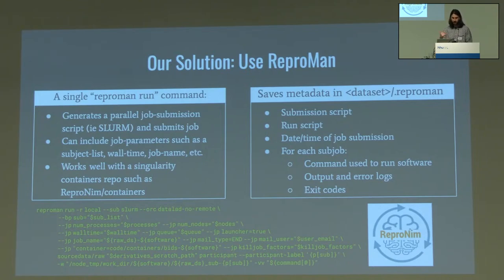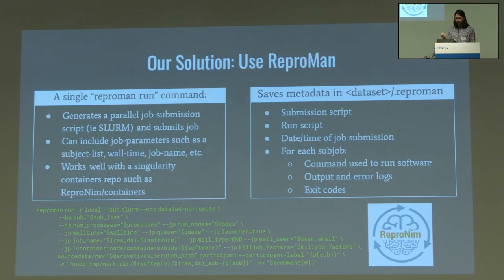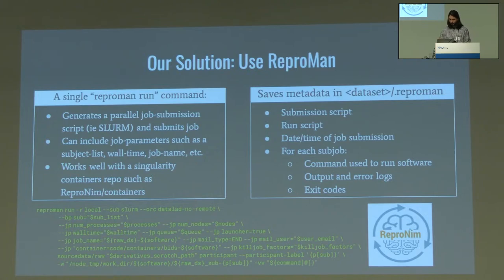It's just like Datalad containers run — it's compatible with a repository of Singularity containers, and we're using Repronim slash containers, which is great for recording provenance and reproducibility. It will save the metadata in your dataset in a .reproman directory — including the submission script, the run script, the date and time of job submission, and for each subjob: the command used to run the software, logs, exit codes, and some other things.